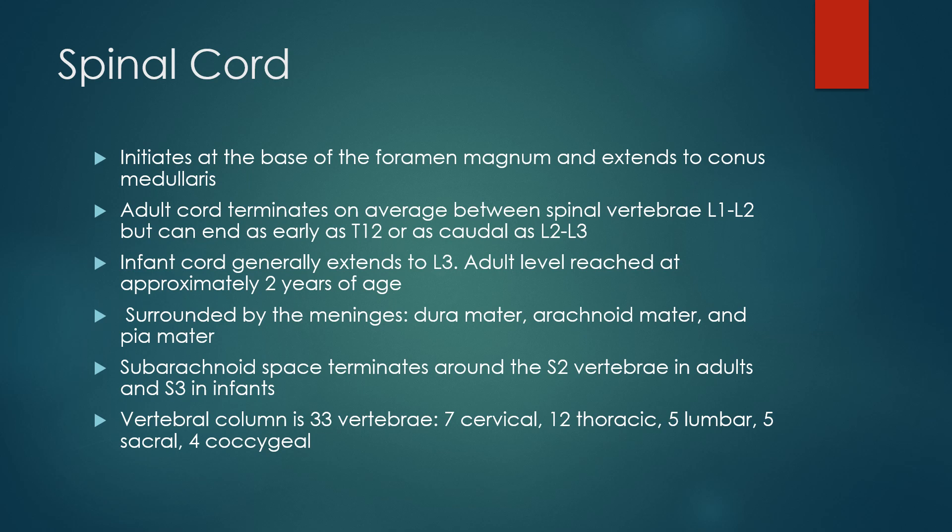The subarachnoid space or dural sac terminates around S2 in adults and around S3 in infants. Most of the differences you'll see on the ITE exam between neonatal and adult spinal anatomy center around where the cord terminates and where the dural sac terminates. There are also differences in ossification rates — ossification of the spine is not complete until seven or eight years old — but for ITE purposes, knowing where the cord ends and where the dural sac ends should be sufficient.